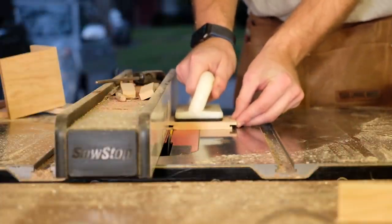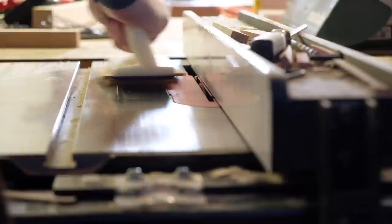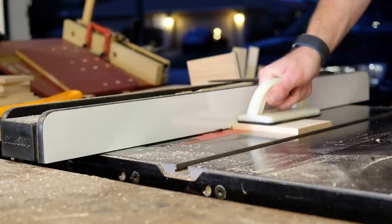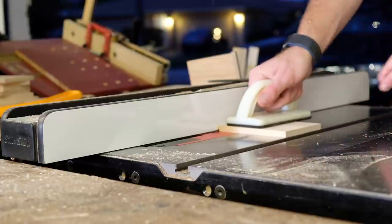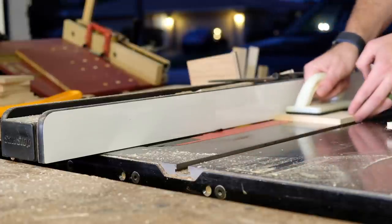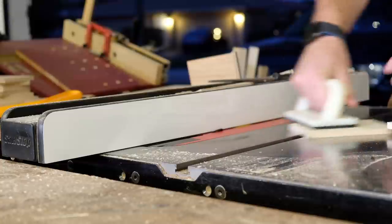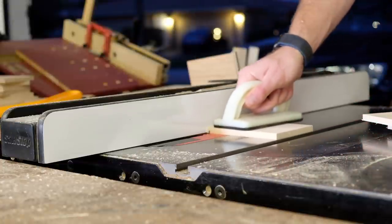The next cut removes the inner part of the drawer front which leaves us with the tongue part of the joint. Then the last cut is a dado in the drawer sides. All of these cuts should be done with the fence at the same exact placement. Only the blade will move. In the end you're left with a neat looking joint that is fairly durable.